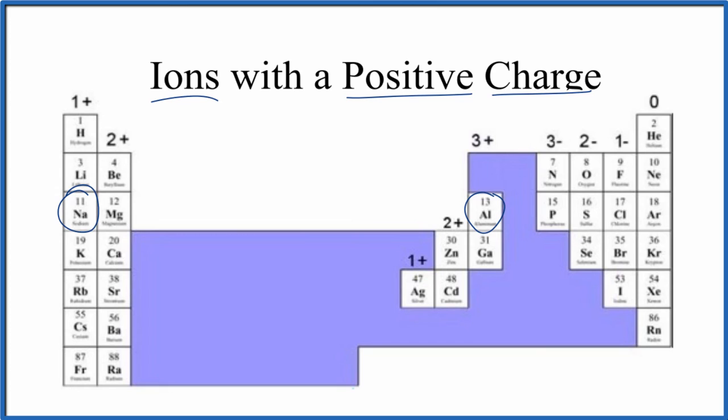Note too that we can have polyatomic ions that are positive, so they're cations as well. H3O+, that's a pretty common one. And then NH4+, the ammonium ion, that's pretty common too. These really are the main positive cations for polyatomic ions.